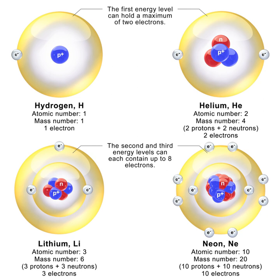In 1938, Otto Hahn, Lise Meitner, and Fritz Strassmann discovered nuclear fission — the fractionation of uranium nuclei into light elements — induced by neutron bombardment. In 1945, Hahn received the 1944 Nobel Prize in Chemistry for his discovery of the fission of heavy atomic nuclei. The discovery of nuclear fission would lead to the development of nuclear power and the atomic bomb by the end of World War II.